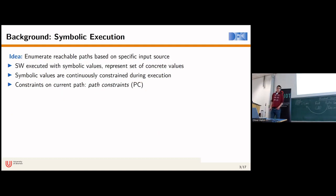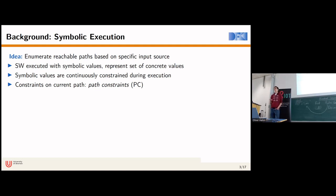I wanted to start with some background on symbolic execution. The basic idea is to enumerate reachable execution paths through a program based on a specific input source. This is achieved by executing the software not with concrete input values like 5, 6, or 7, but instead with symbolic values.